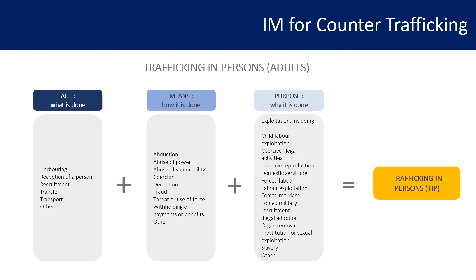These three components — act, means, and purpose — must all exist at the same time and be correlated for a case to be considered trafficking in persons. Since trafficking is a crime and a human rights violation, a lawyer, social worker, or protection officer would need to prove each component and their correlation. However, when looking at trafficking from an information management perspective, we might not need to strictly demonstrate that all three components are correlated.